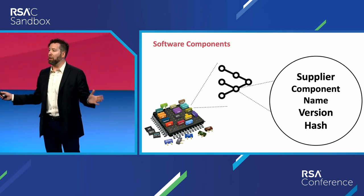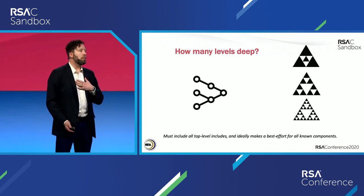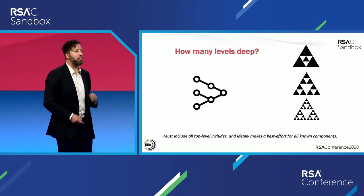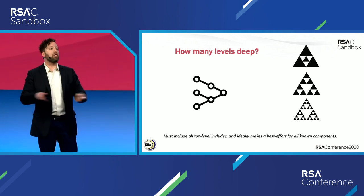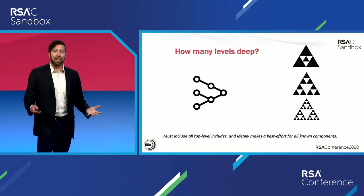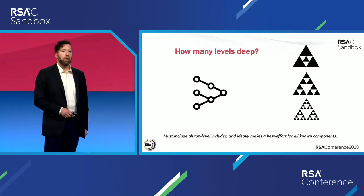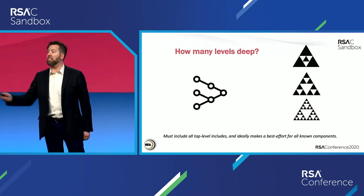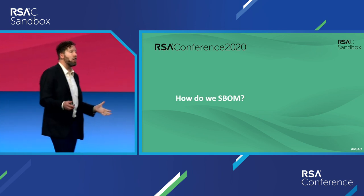Nothing here is revolutionary — we're not trying to build a brand new standard. Operationally, how much data do you want? As a former academic I want all the data, but I understand that as we start this process we're not necessarily going to get there. So the minimum SBOM must include all of your top-level dependencies, and you must make a good faith effort to get the next level down. Ideally, as this process grows we can recurse our way to greater transparency.